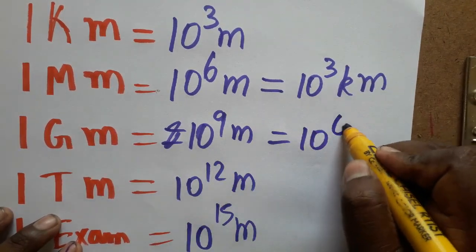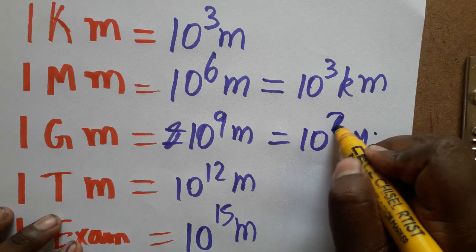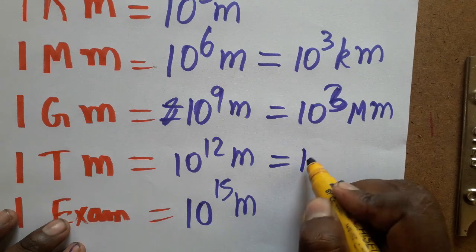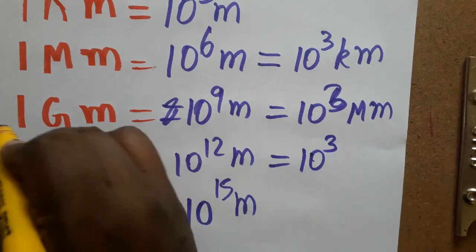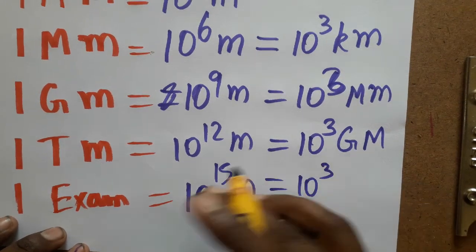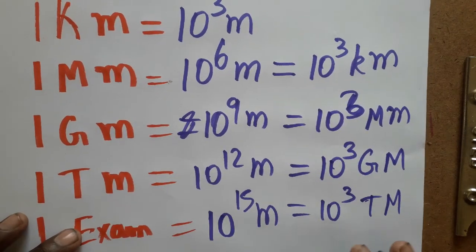1 terameter is 10 power 3 gigameter. 1 exometer is 10 power 3 terameter. You see here, always the power will be 3, 3, 3 will get increase.